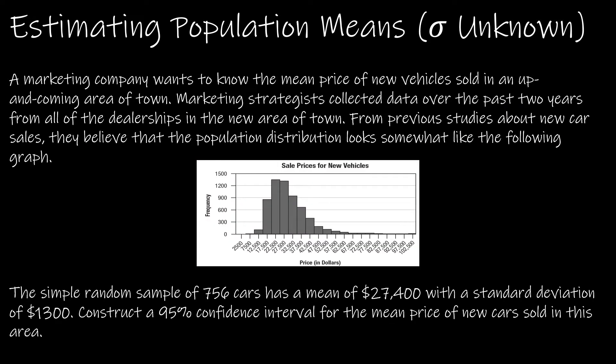Let's take a look at a question together and we'll work through all the steps. A marketing company wants to know the mean price of new vehicles sold in an up-and-coming area of town. Marketing strategists collected data over the past two years from all dealerships in the new area of town. From previous studies about new car sales, they believe the population distribution looks somewhat like the following graph. What we want to notice here is this is a skewed graph, so the population is not normally distributed.